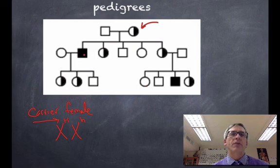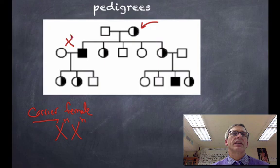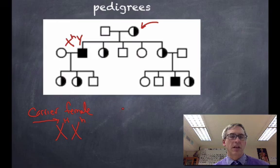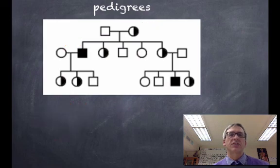A male who has the disorder is going to be X lowercase h, Y. He will have the disorder because he has no allele on the Y chromosome to cover up this recessive allele. So hemophilia is a good example.